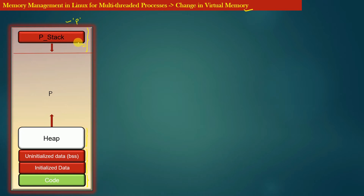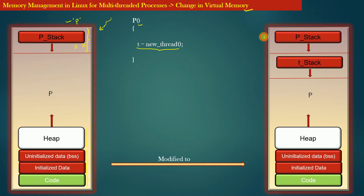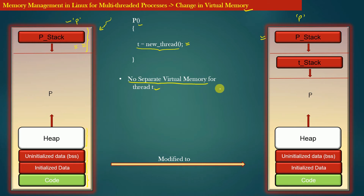Every independent unit of execution needs stack memory. Now suppose that process P during the course of its execution creates a new thread. After the creation of this new thread, the diagram on the right hand side shows the virtual address space of process P after thread creation. There is no separate virtual memory for the newly created thread — all this virtual memory still belongs to process P, but it is also shared by the newly created thread.